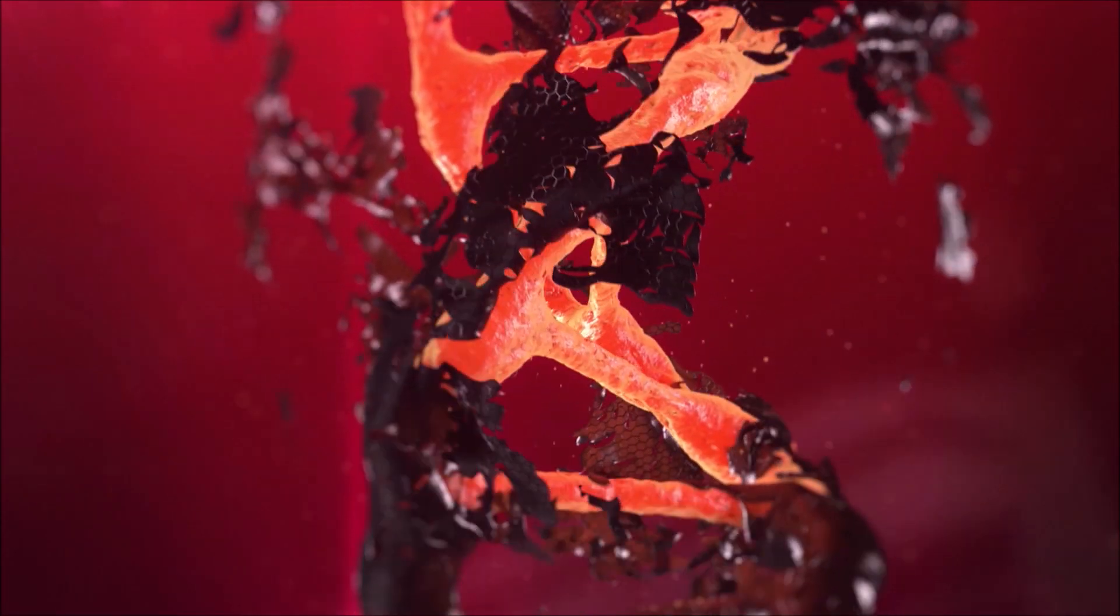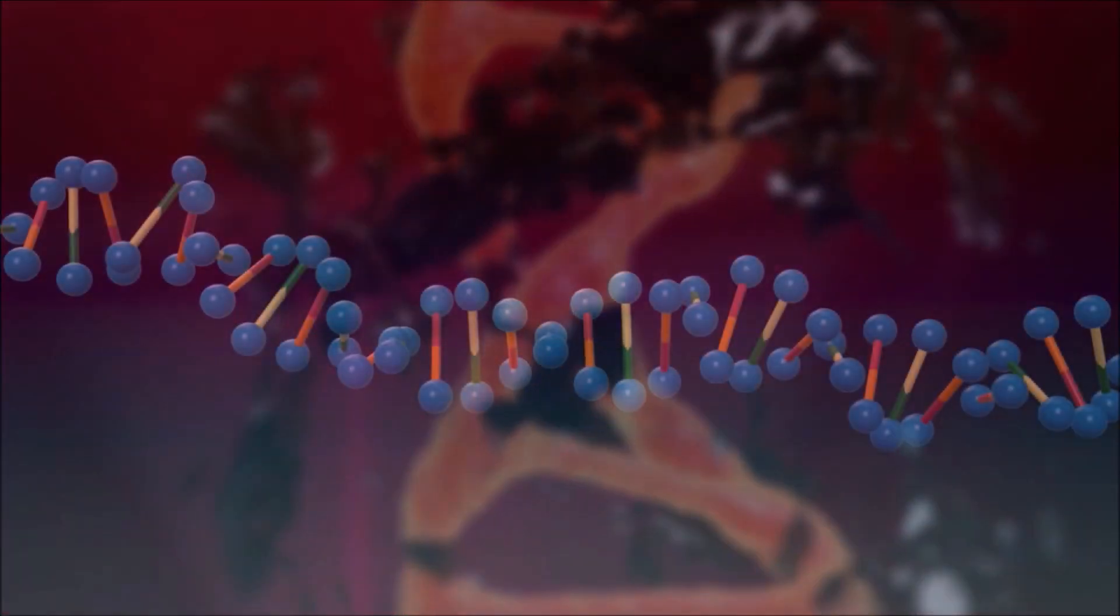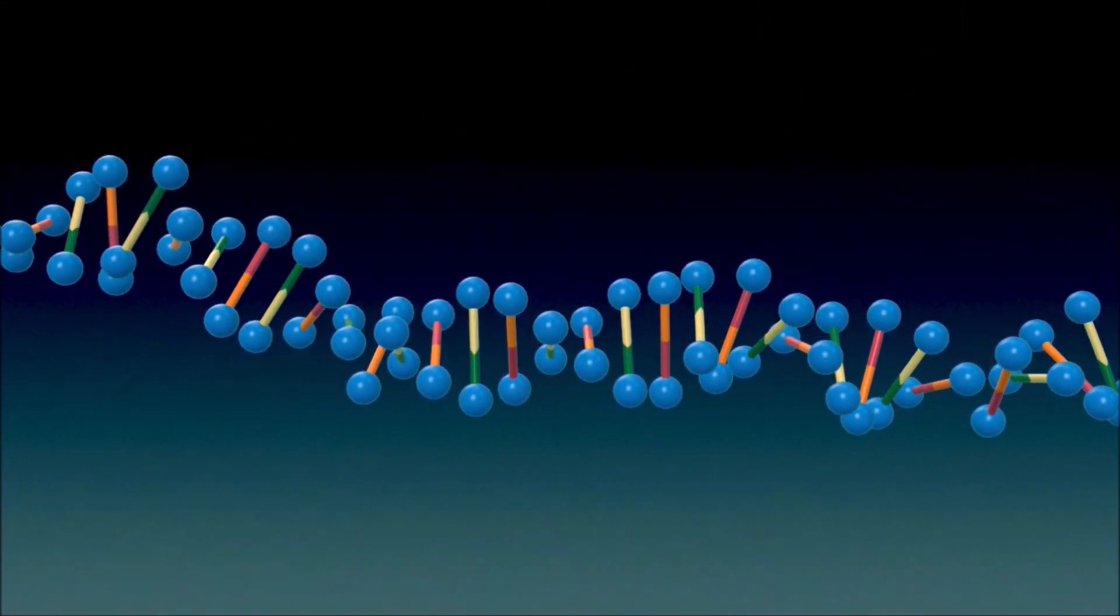Additionally, you cannot distinguish species through the number of chromosomes alone. In fact, the number of chromosomes in an animal or plant is determined by complete randomness.